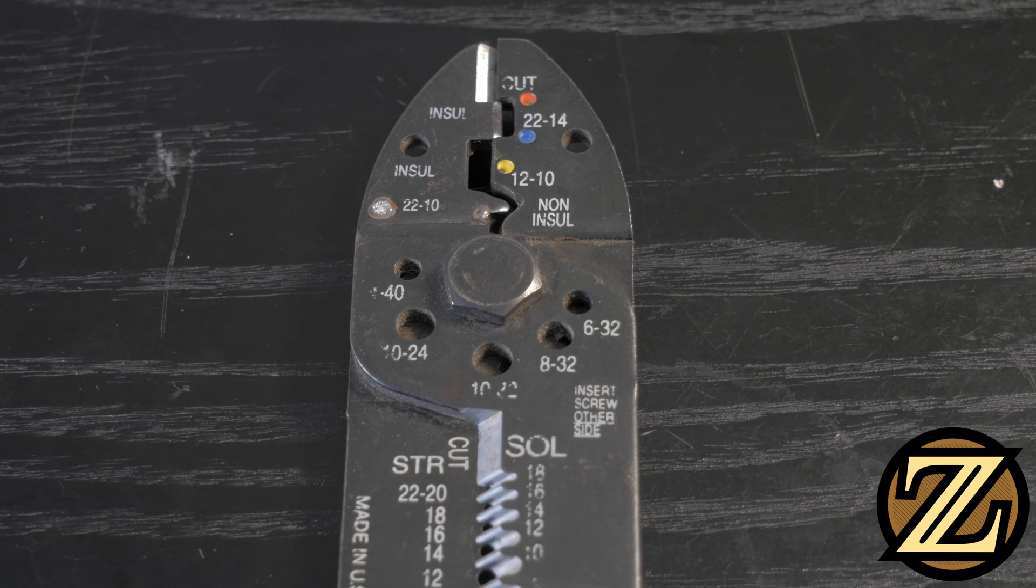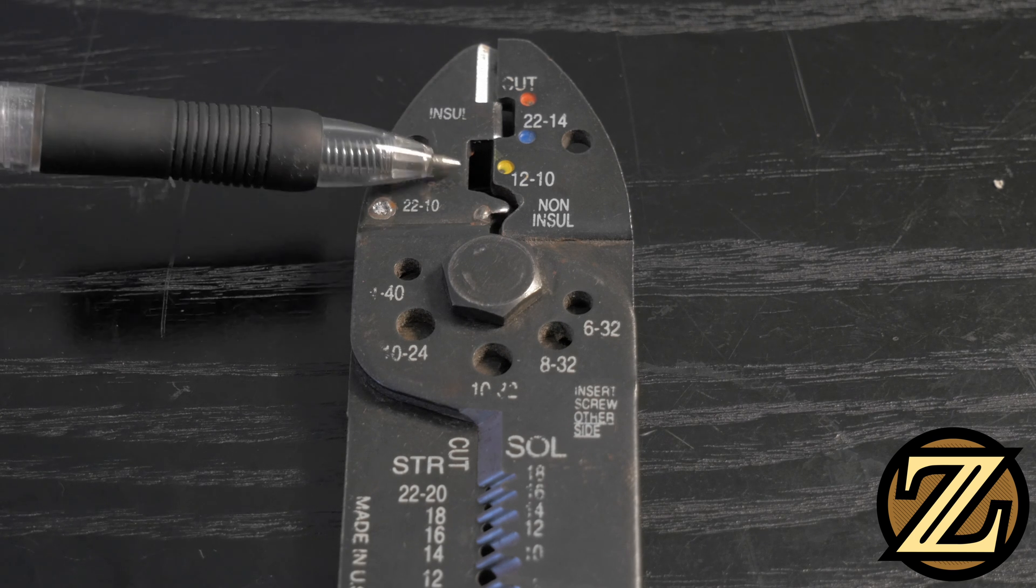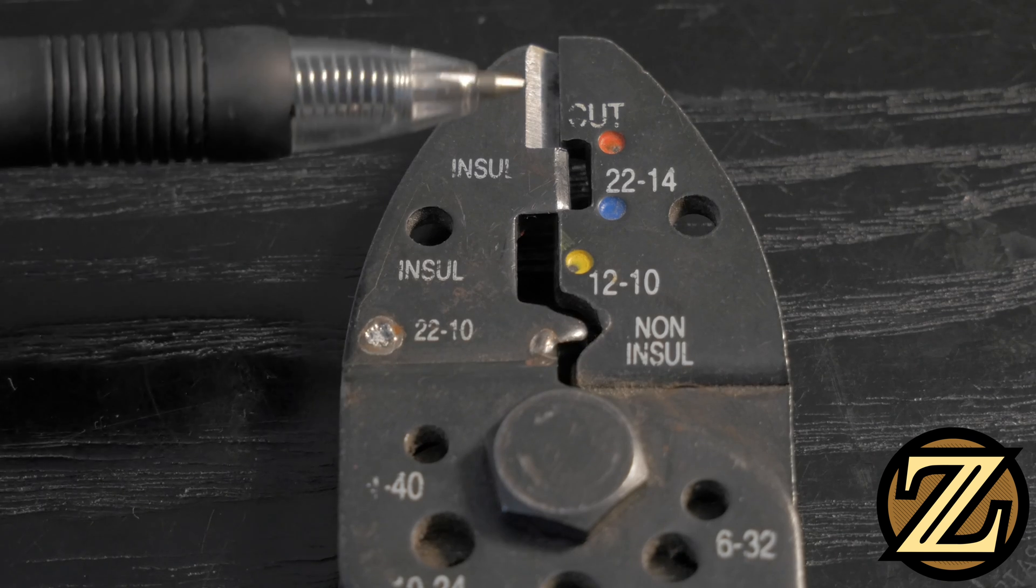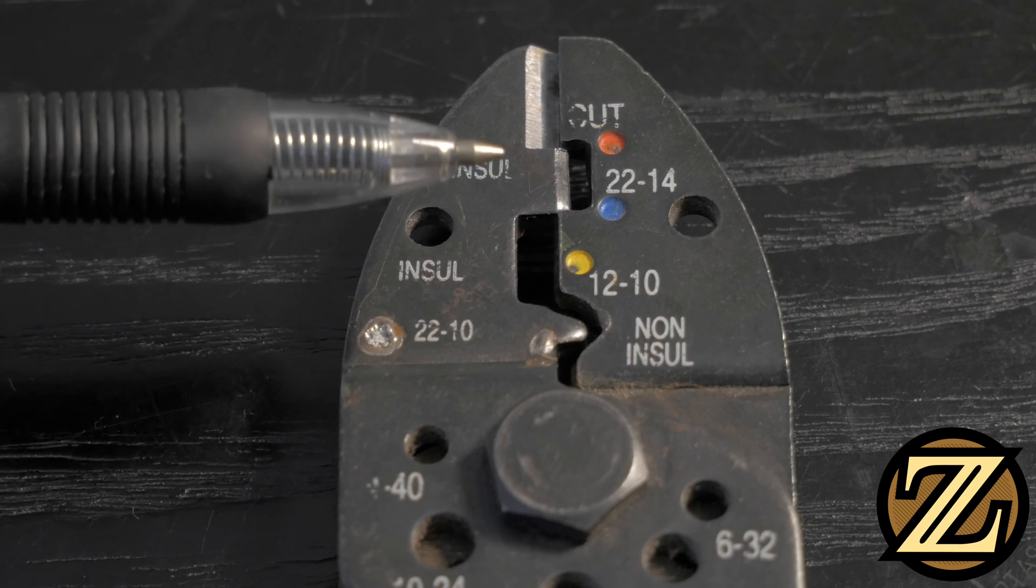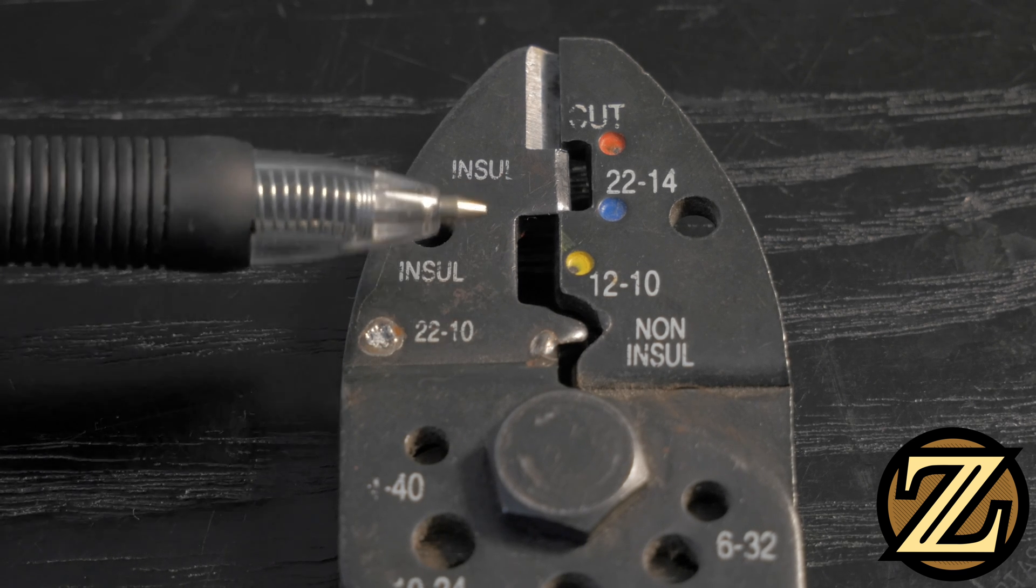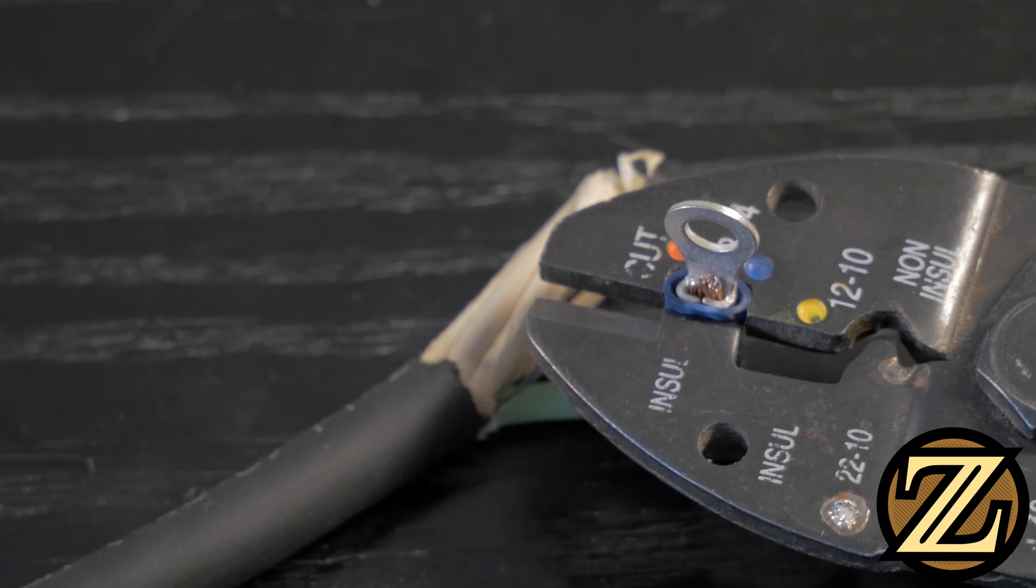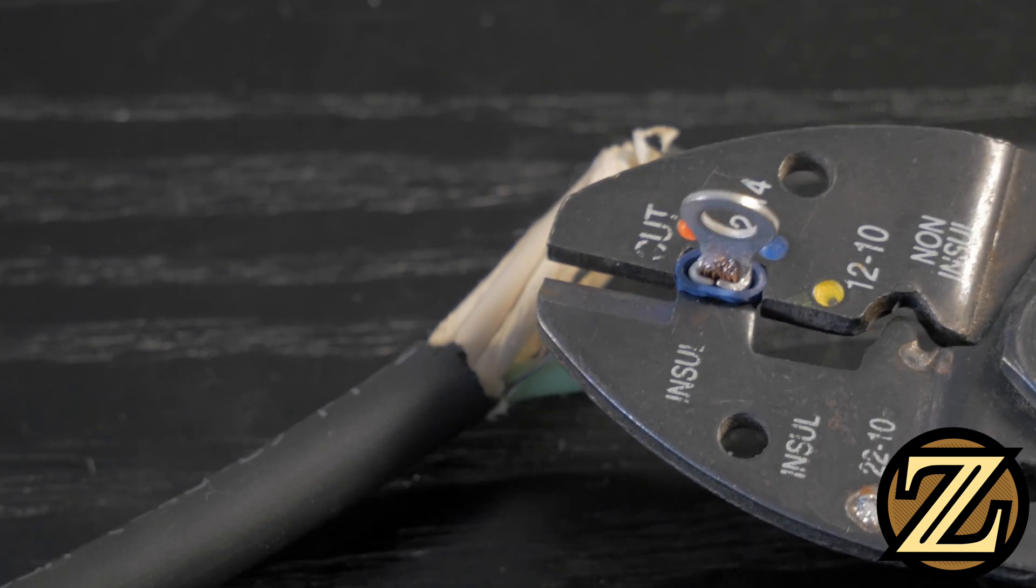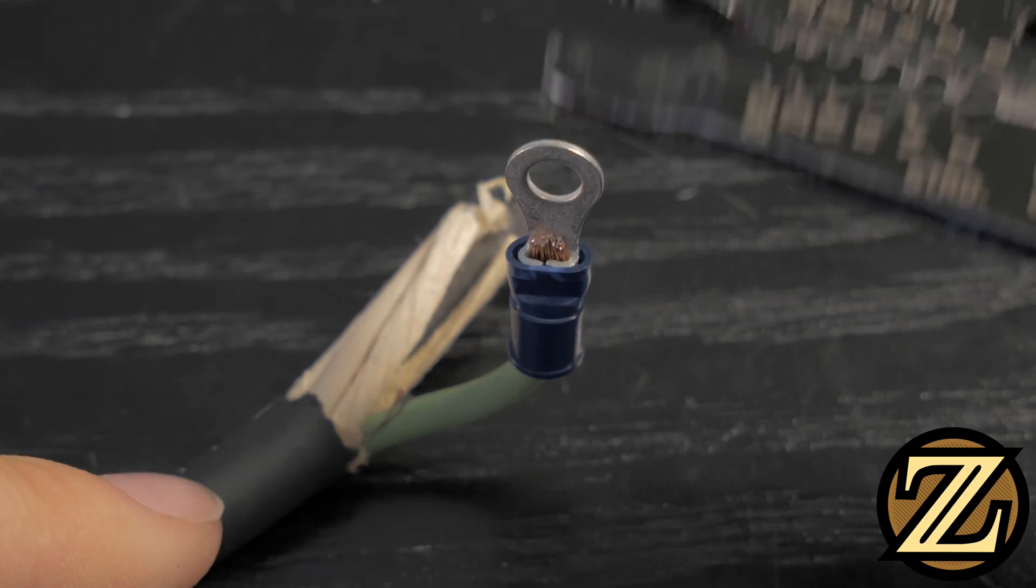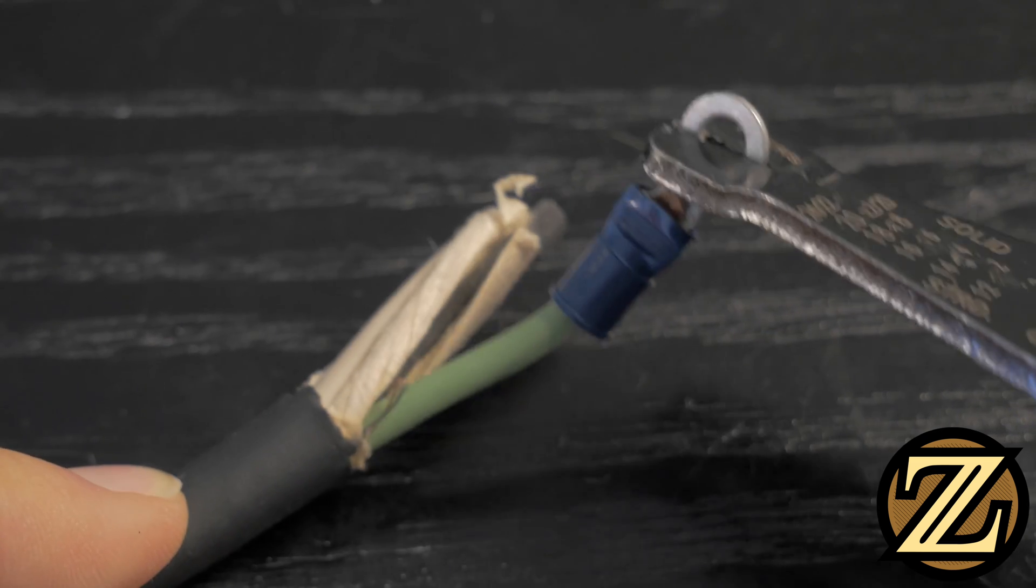Okay, now let's take a look at how to crimp with this stripper-crimper combo. This time we see that we have the same color coding, so red, blue, and yellow. And we have two slots. We see that the slots are actually flat and not curved, so it doesn't really matter the orientation of the terminal when you're about to crimp. Put the terminal inside of the appropriate slot and squeeze. Review the quality of your terminal job, and if all looks good, then you're done.